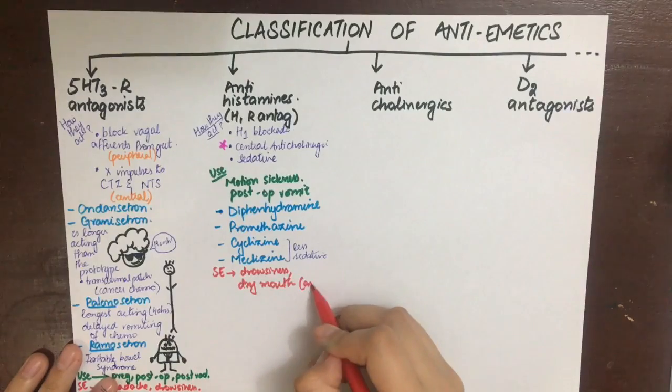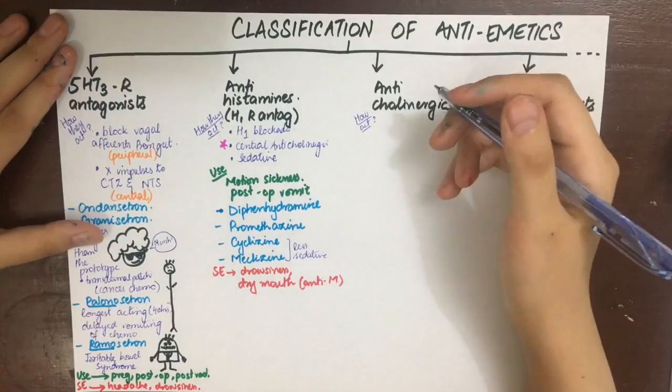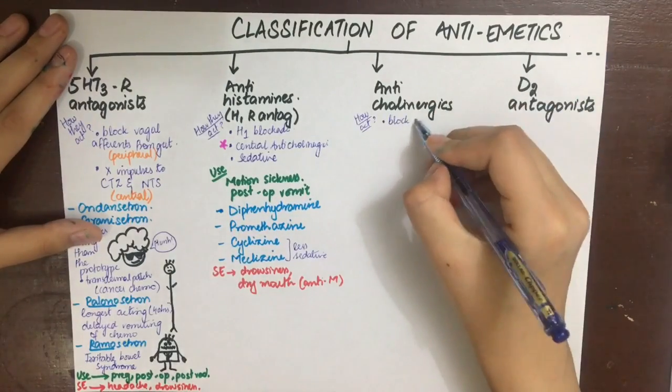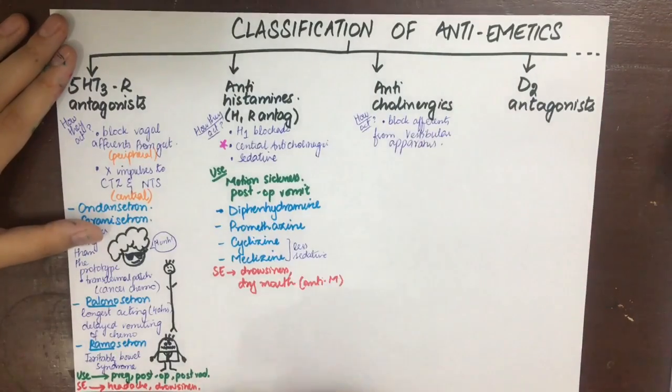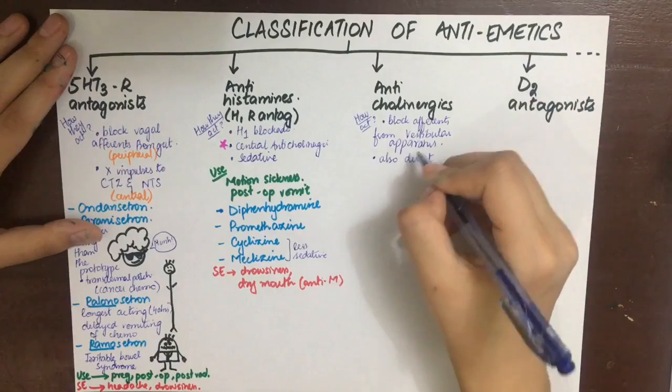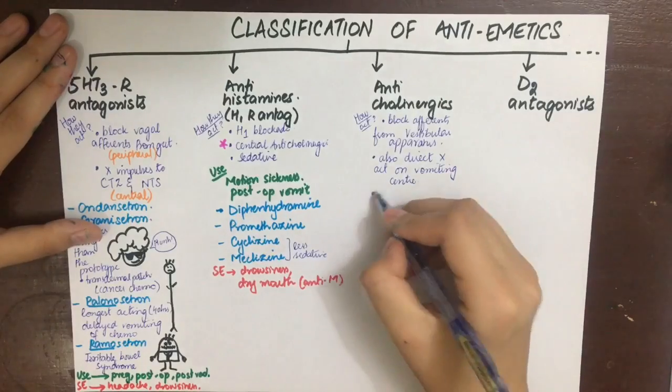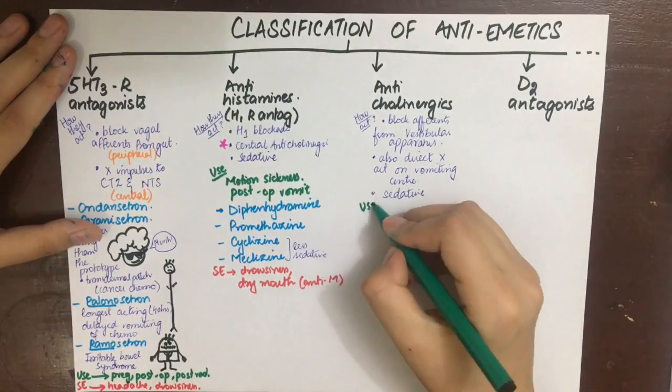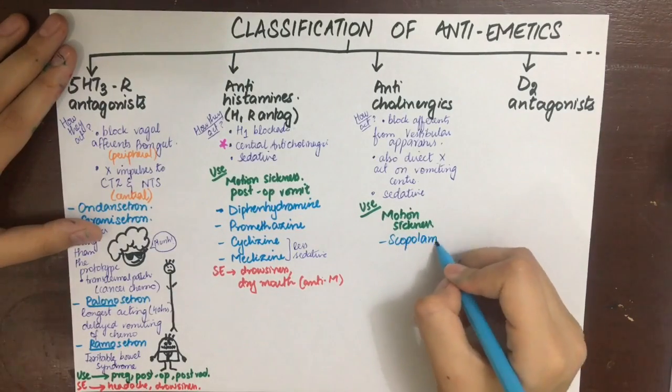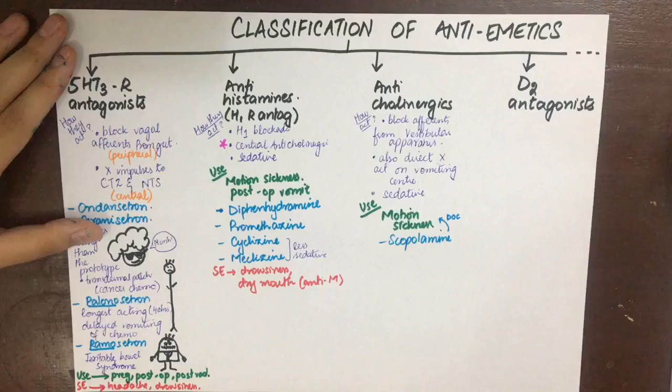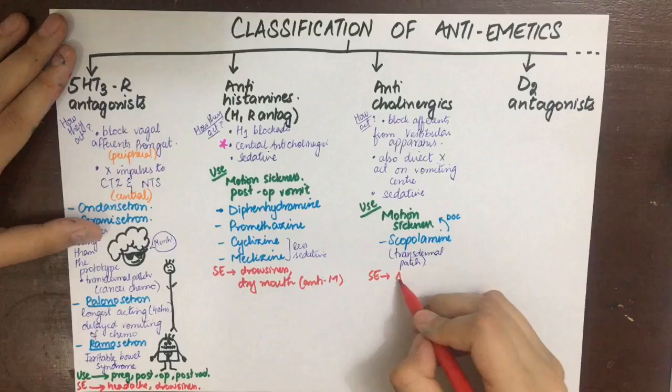Anticholinergics are the drugs of choice for motion sickness. They block the efferents from vestibular apparatus and directly block the M1 receptors on the vestibular apparatus and vomiting center. They also have sedative action. The chief drug used is scopolamine, also known as hyoscine. This is the drug of choice for motion sickness, mainly applied as a transdermal patch before starting the journey. It has atropine-like side effects.